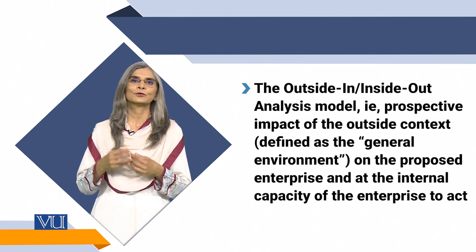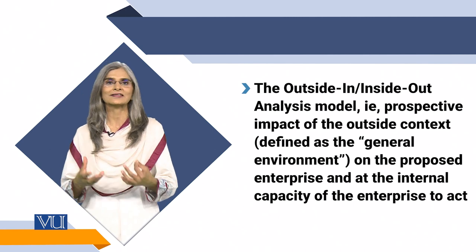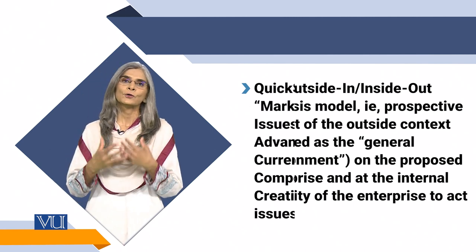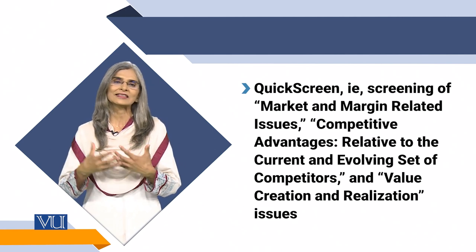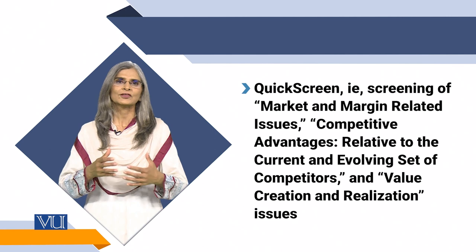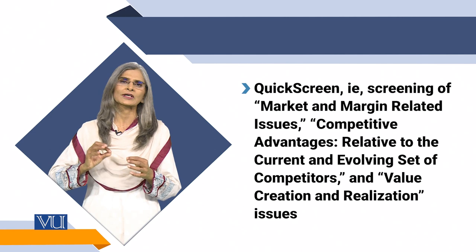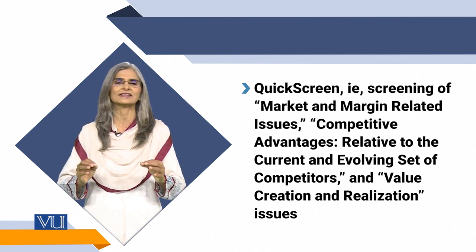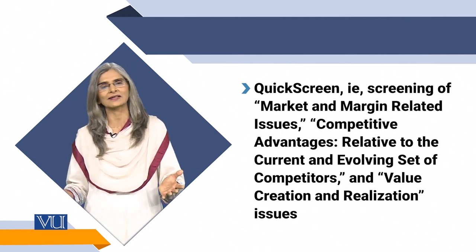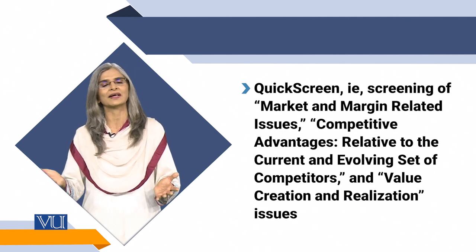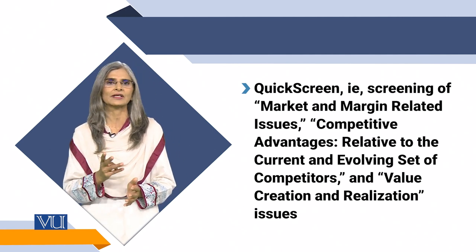A third tool that social entrepreneurs use to assess the viability of their ideas in terms of opportunity is called the quick screen. This is basically a streamlined screening. Unlike SWOT analysis or outside-in, inside-out analysis, you do not analyze every small factor and nitty-gritty — comparing what is more, what is less, what is positive, what is strength, what is weakness. In this, basically three things are screened.